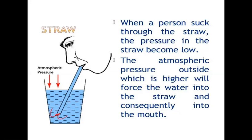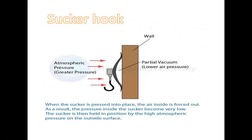That is why we are able to drink with the help of a straw. When a sucker is pressed into place, the air inside is forced out. As a result, the pressure inside becomes very low and an area of partial vacuum is created. The sucker is then held in position by the high atmospheric pressure on its outside surface, which is why it sticks to a wall and can support heavy weight on a sucker hook.